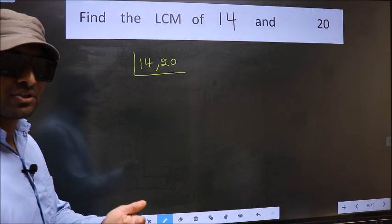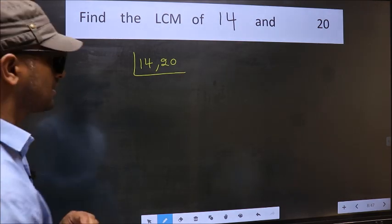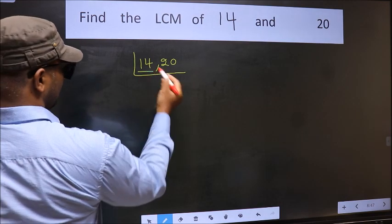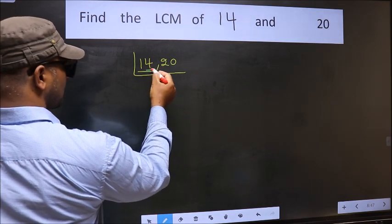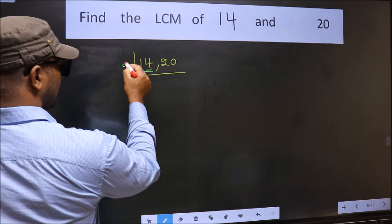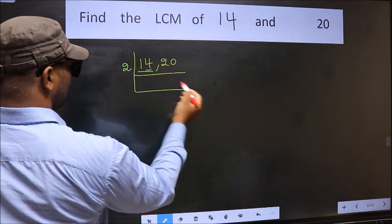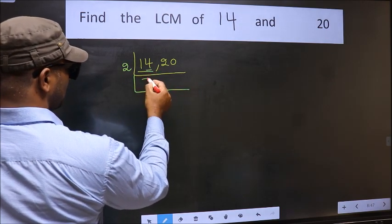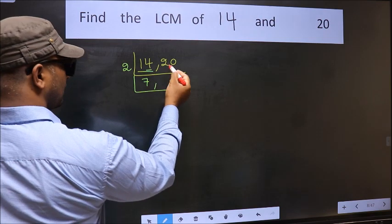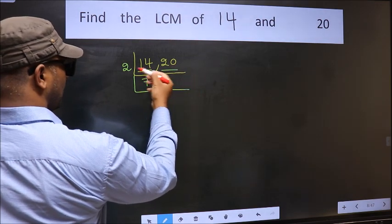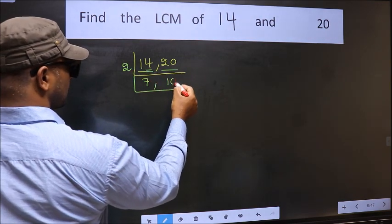Now you should focus on the first number which is 14 here. For this number, last digit 4. So take 2. When do we get 14 in 2 table? 2 7s, 14. Now the other number 20. When do we get 20 in 2 table? 2 10s, 20.